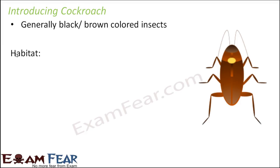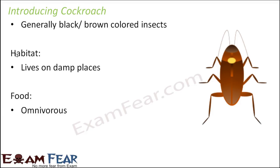Regarding habitat, cockroaches live in damp places. That damp place can be anywhere — we often see them in our houses, in our kitchen, because the kitchen is an area where we use a lot of water to wash utensils or prepare food, so there are damp places in and around the kitchen. As for food, they are omnivorous, feeding on both flesh as well as plants.